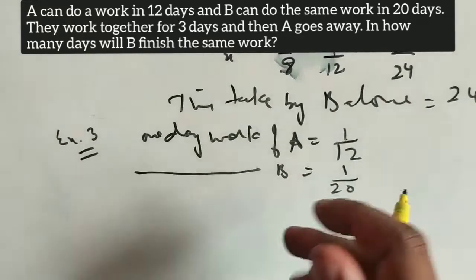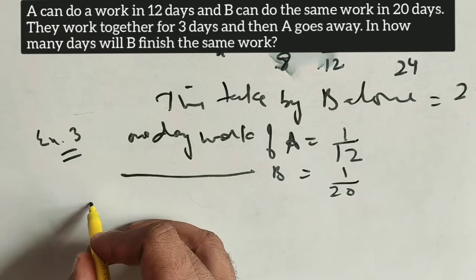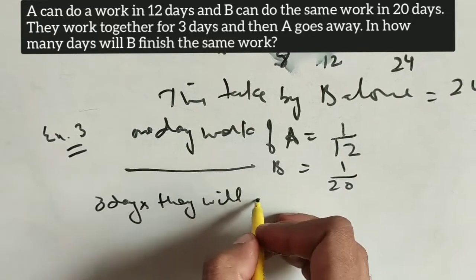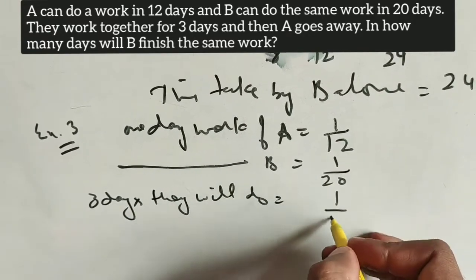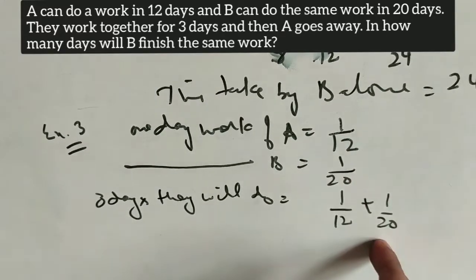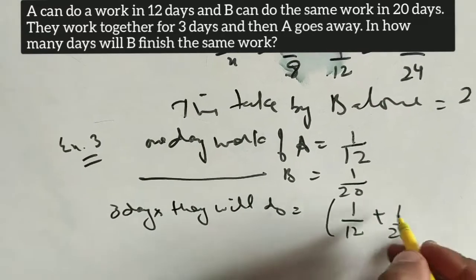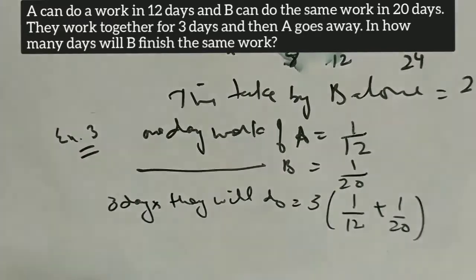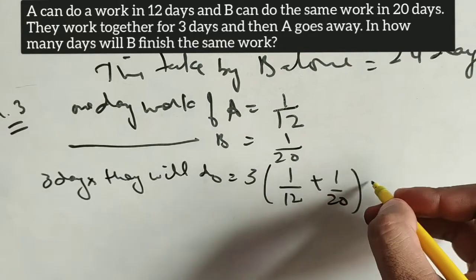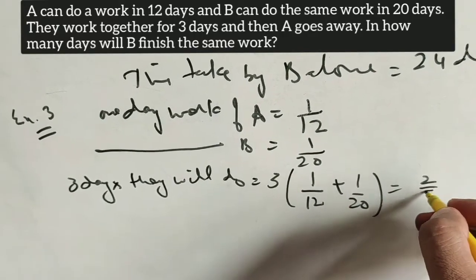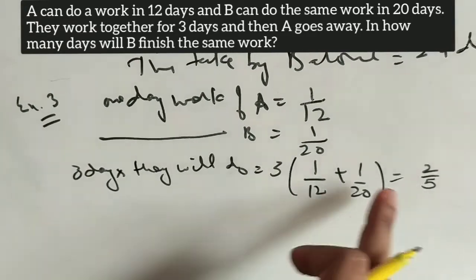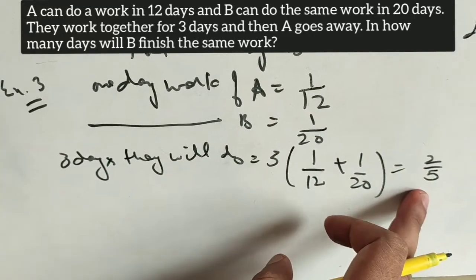They work together for 3 days. Their combined 1-day work is 1/12 plus 1/20, and this should be multiplied by 3 to get the work completed in 3 days. Work completed in 3 days equals 2/5. So in 3 days, they have completed 2/5 of the work.